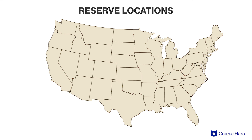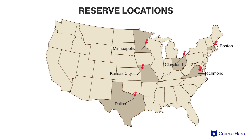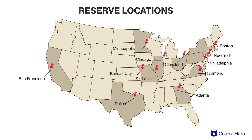There are 12 Federal Reserve Banks in the Federal Reserve System. The member banks are in Richmond, Boston, Dallas, Cleveland, Kansas City, Minneapolis, St. Louis, New York, Philadelphia, Atlanta, Chicago, and San Francisco. The Federal Reserve oversees these banks.